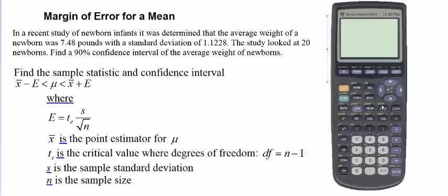So here we're going to once again go to stat and over to test. Similar to how we did when finding the margin of error for a proportion, instead of using z-interval like we did last time, we're now going to use a t-interval since this uses a student t-distribution.